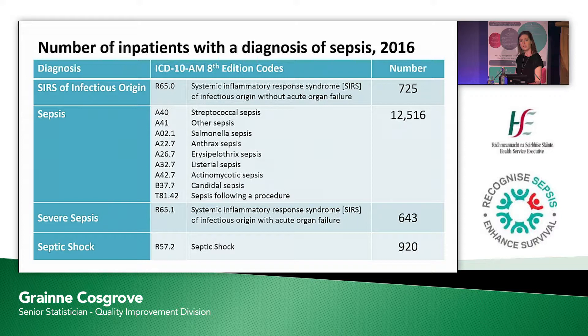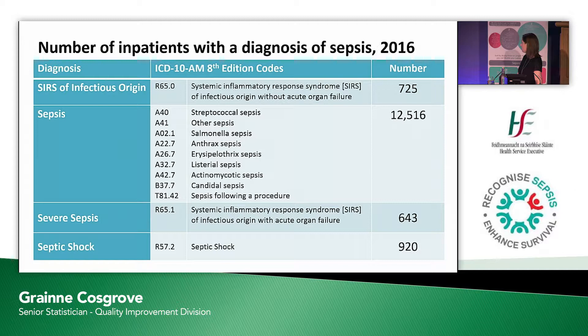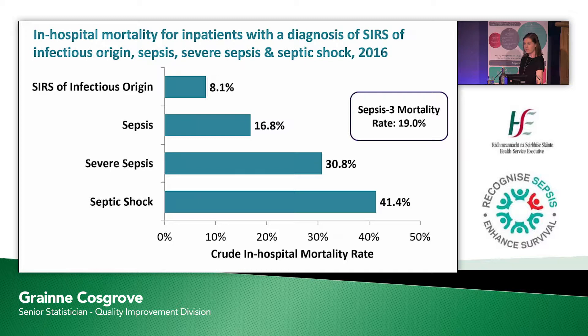We're fortunate that we use the eighth edition of the ICD-10-AM classification — the eighth edition Australian modification of ICD-10. In this classification, there are specific codes for SIRS of infectious origin without acute organ failure, several different codes for sepsis, a code for severe sepsis with organ failure, and septic shock. There are relatively small numbers of cases of patients with SIRS and septic shock. The mortality rate varies significantly: SIRS of infectious origin without acute organ failure had a mortality rate of 8.1%, rising to over 30% for severe sepsis and 41.4% for septic shock.